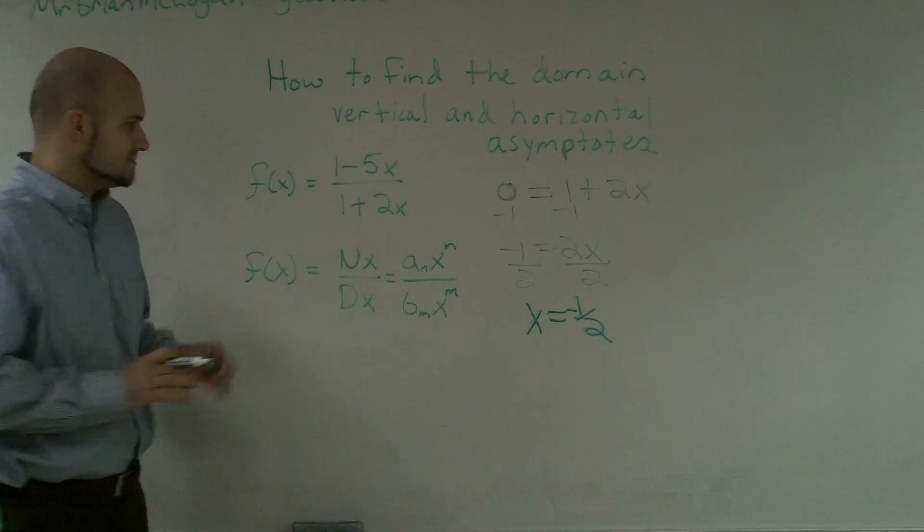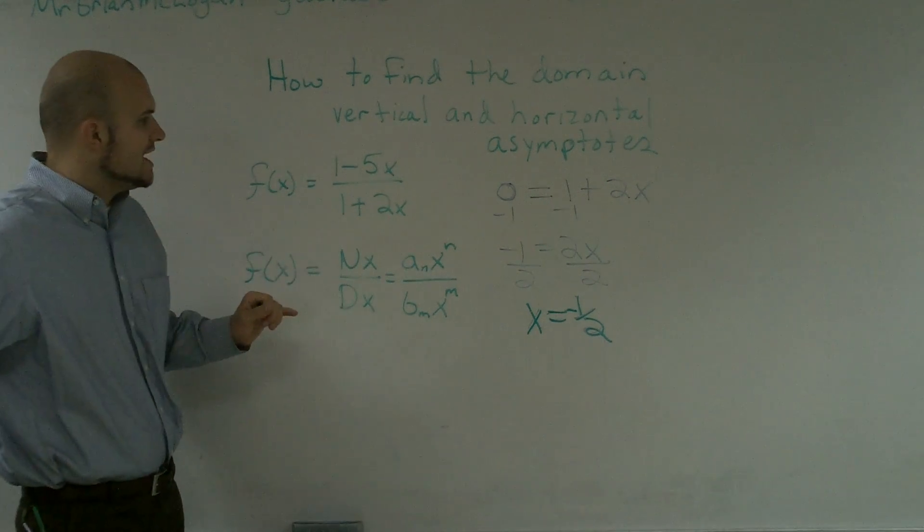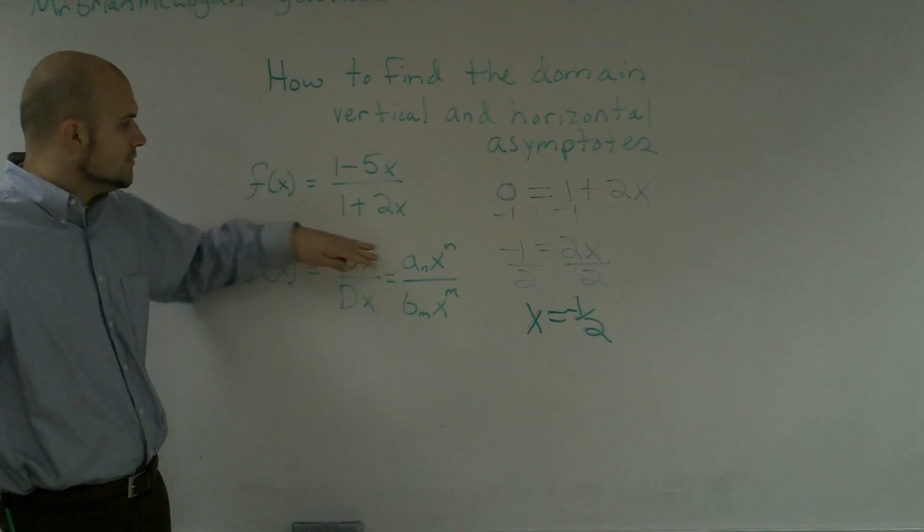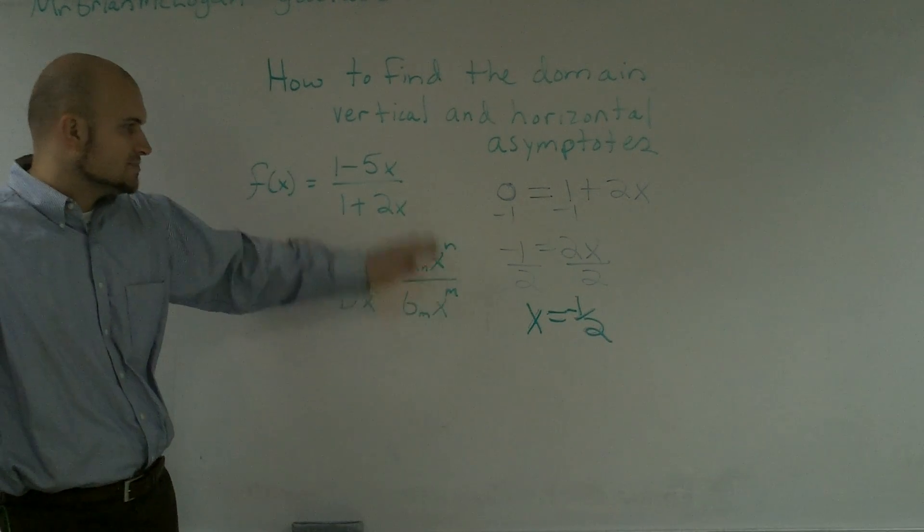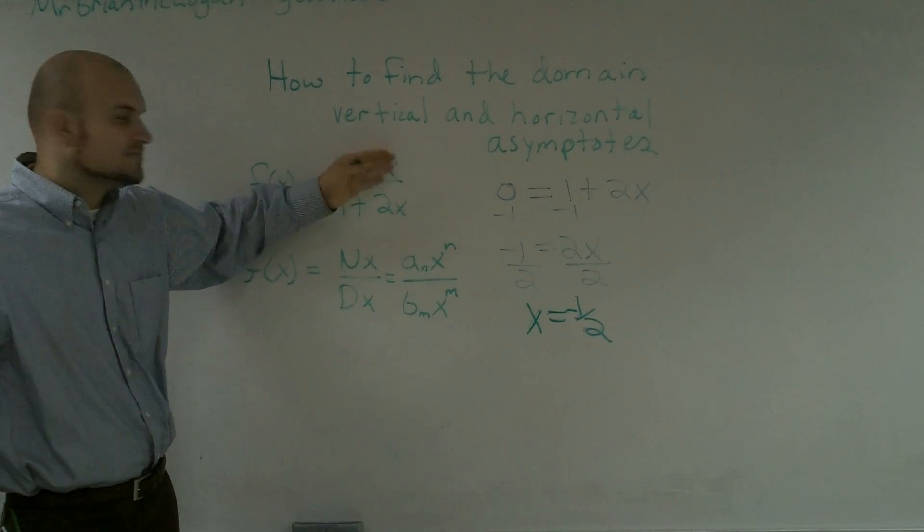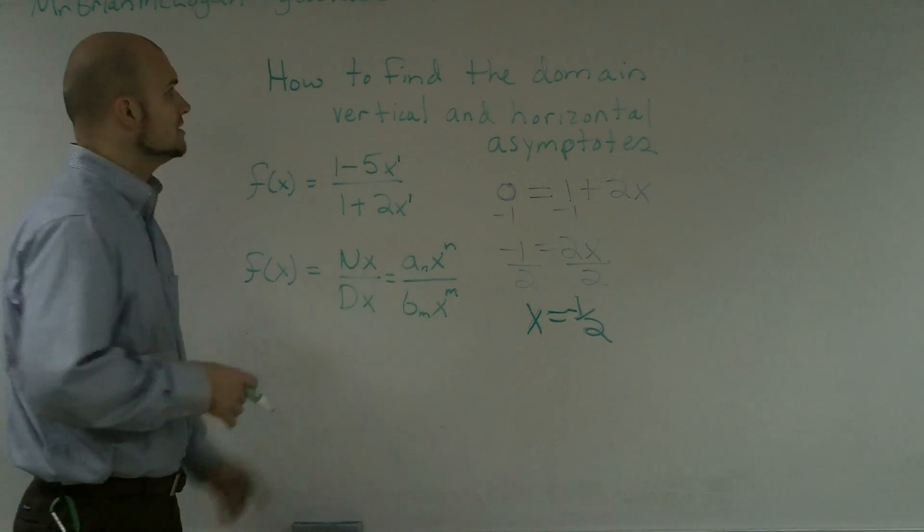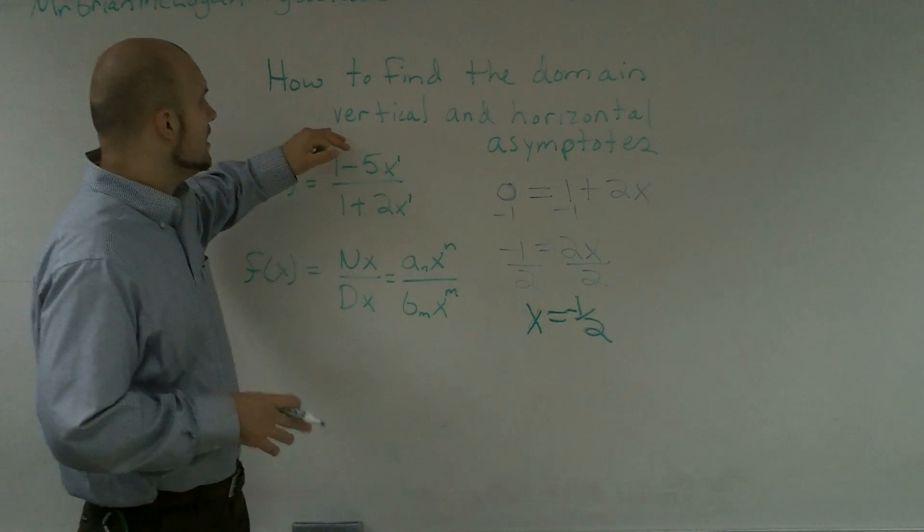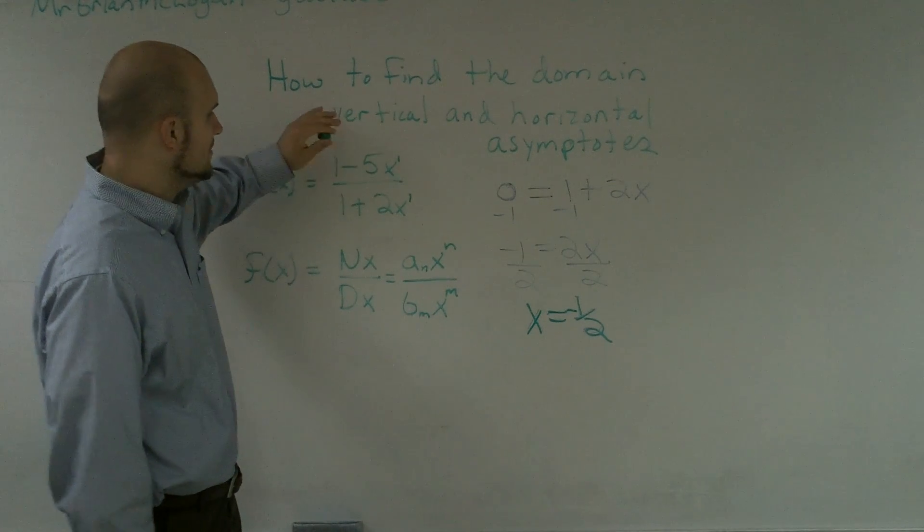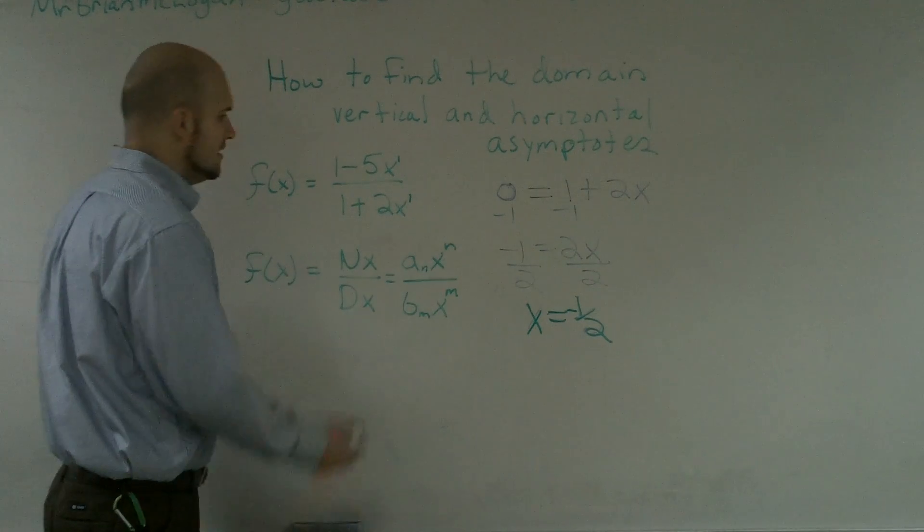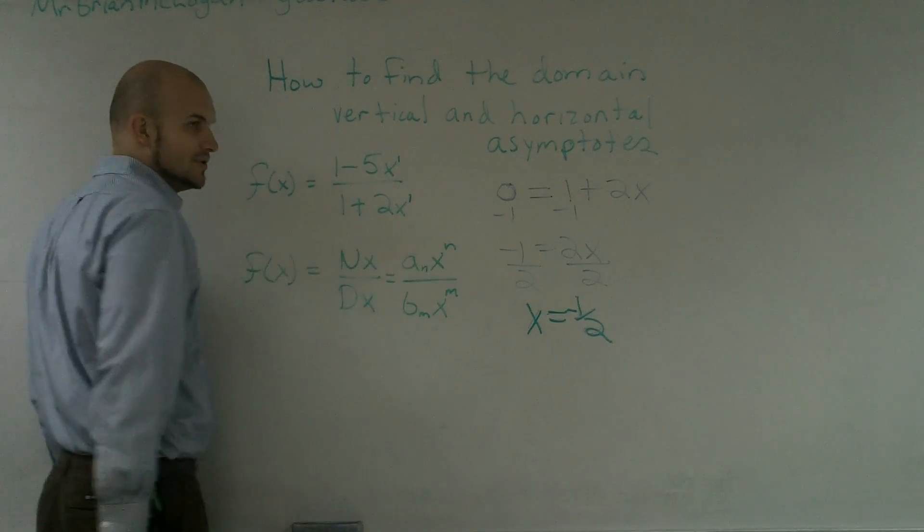Now, when determining if we have an x or y intercept, we need to look at our exponents. Since both exponents have a 1, we know that our exponents are equal to each other. So when I want to find our horizontal asymptotes, we need to look at the exponents.